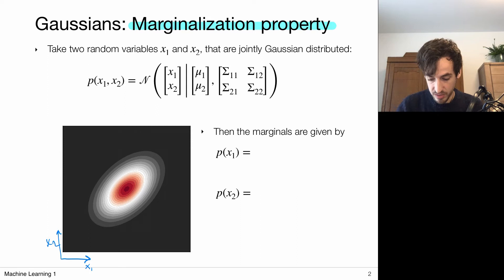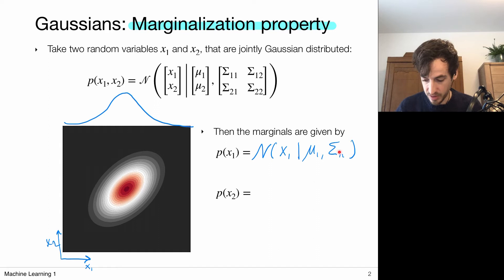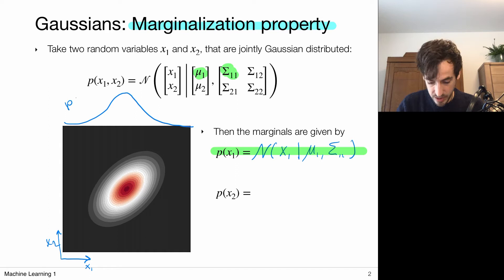So we marginalize out x2, and that gives us a distribution for x1. This distribution for x1 will in turn be a Gaussian distribution again. Specifically, the distribution for x1 is a Gaussian with mean mu1 and covariance sigma11. So if I have such a joint distribution with mean component mu1 and covariance sigma11, I can just use this to define my marginal distribution p of x1.